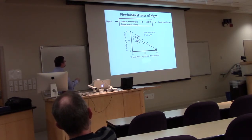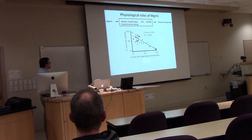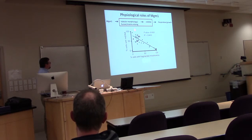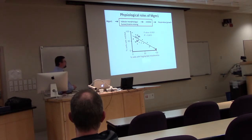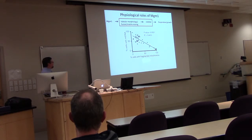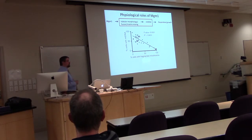We expect tubular morphology to correlate with mitochondrial genome maintenance. There's a pretty good correlation between how much mitochondrial DNA is retained and how interconnected the network is. These data points represent different mutations — a cluster of the most deleterious mutations completely knocked out MGM1 function, with a good range of intermediate effects.